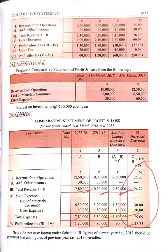For the percentage change, the formula is absolute change upon previous year value into 100. For example: 2 lakh 50,000 upon 10 lakh into 100 equals 25%. Similarly, 1 lakh 50,000 upon 5 lakh into 100 equals 30%, and 10,000 upon 50,000 into 100 equals 20%.